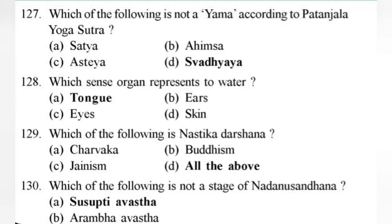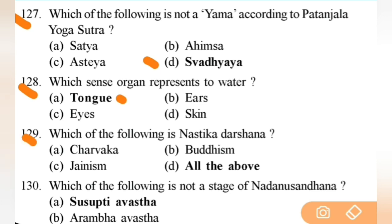Which of the following is not a Yama according to Patanjali's Yoga Sutras? Right answer is D — Svadhyaya. Next: which sense organ represents water? Right answer is D — important. Next: which of the following is Nastika Darshana? Right answer is D — all of the above: Charvaka, Buddhism, Jainism.